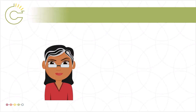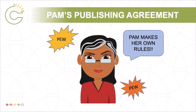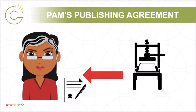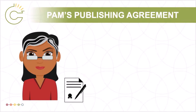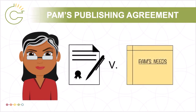Pam remembers a conversation she had with her university's copyright librarian about authors' rights, and she chooses not to accept the $3,000 open access option or the terms of the online publishing agreement within the automated process. Instead, she sends an email to the publisher and is almost immediately provided with a PDF version of the agreement. Before reviewing the agreement, Pam considers the commitments she knows about and the potential downstream uses for the article she anticipates. Her commitments include the funding agency's open access policy and retaining a non-exclusive license for her employer to use the work internally. Potential downstream uses include sharing the article with her future students in a classroom setting, with colleagues at professional conferences, rewriting the article for publication as a book chapter, and providing research participants with a copy of the final article.